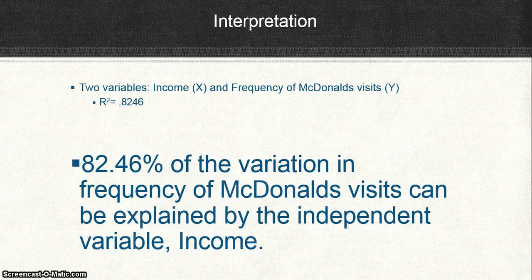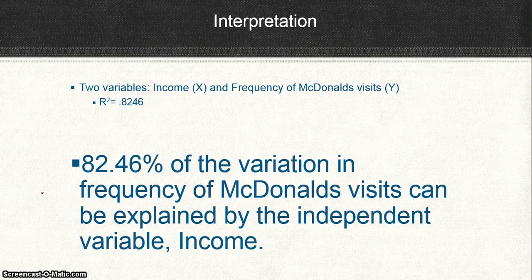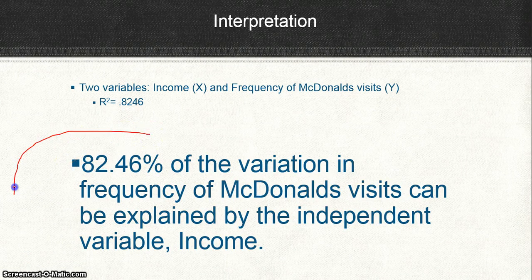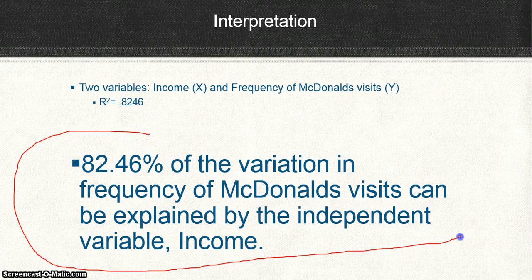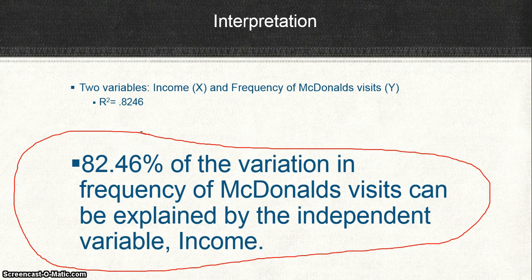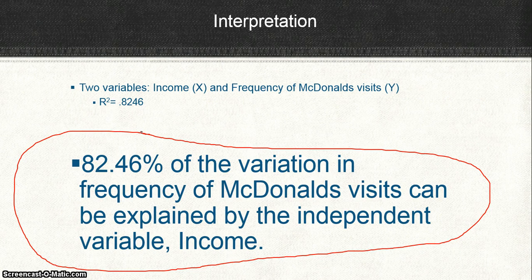82.46% of the variation in the y variable can be explained by the independent variable. So whatever r squared is, you just plug it into the percentage value. And you say whatever percentage of variation in the y variable can be explained by the independent variable. All you need to do is memorize this format, plug in your r squared value, and you are golden. This is all AP Statistics really wants you to know about the coefficient of determination.